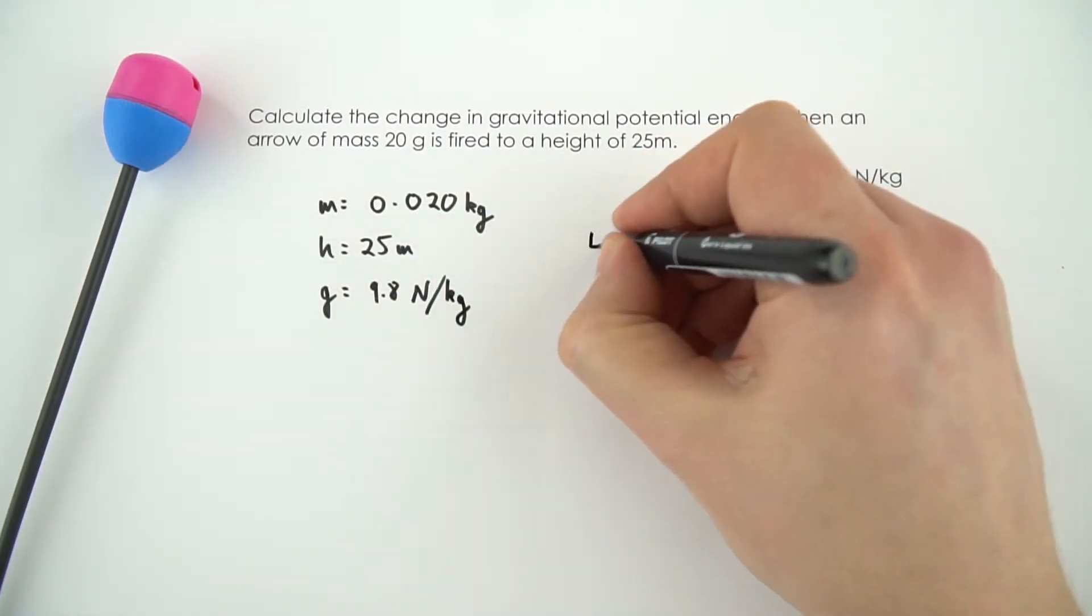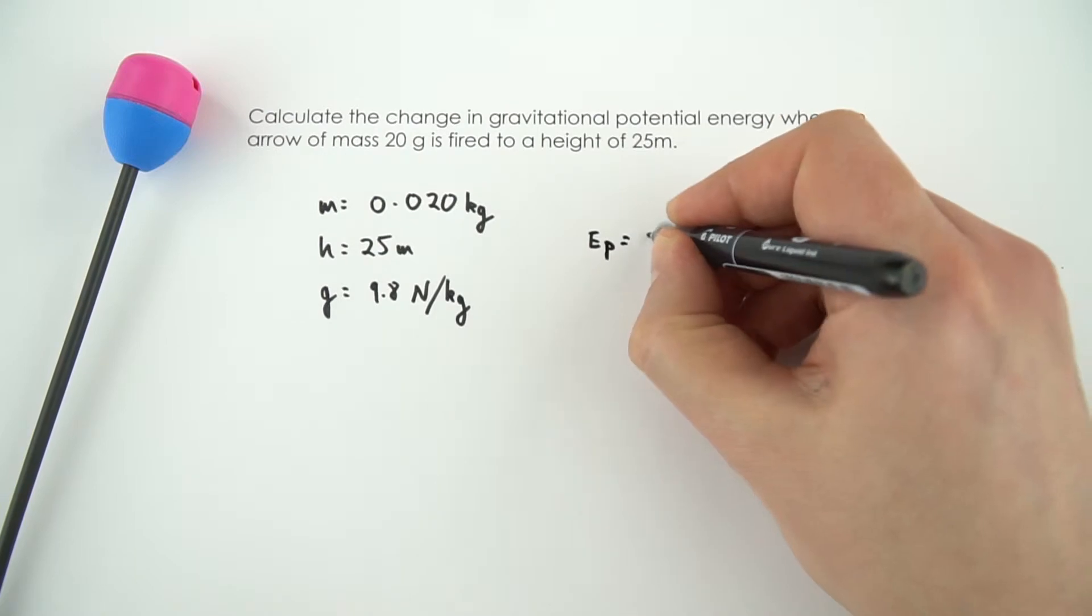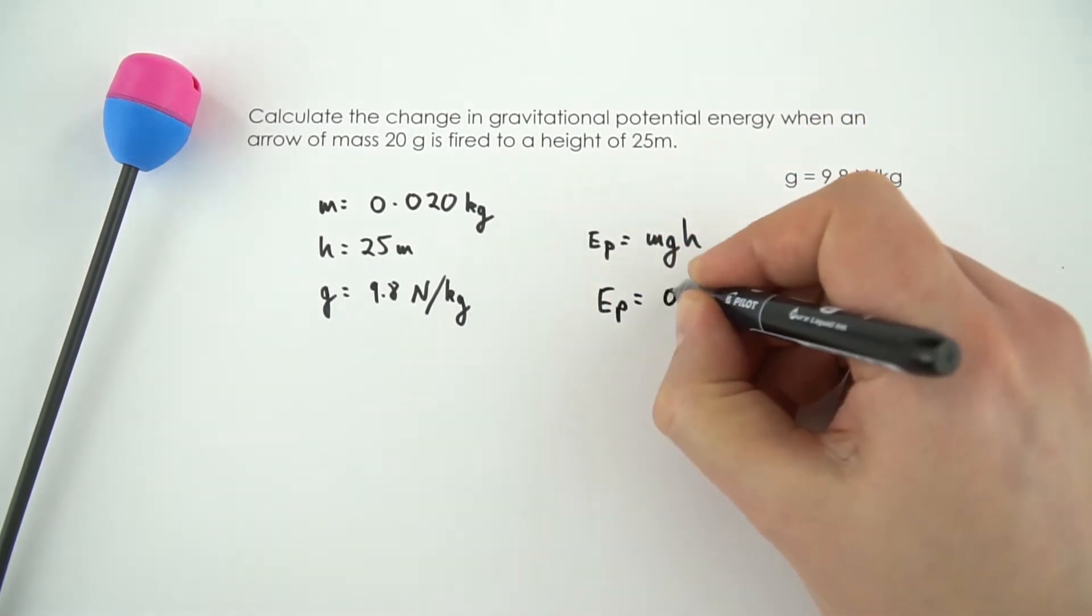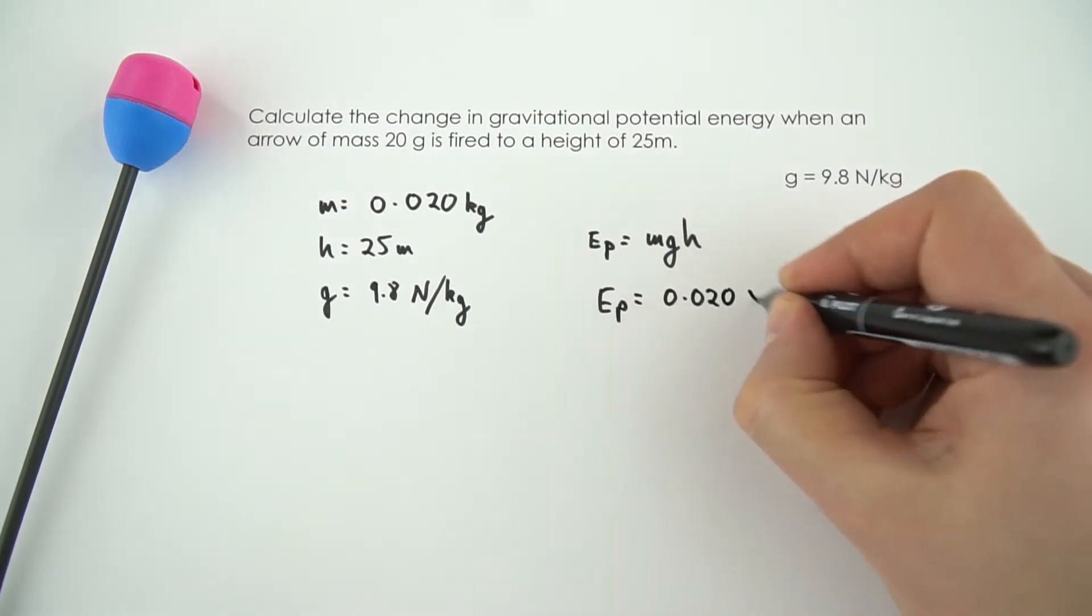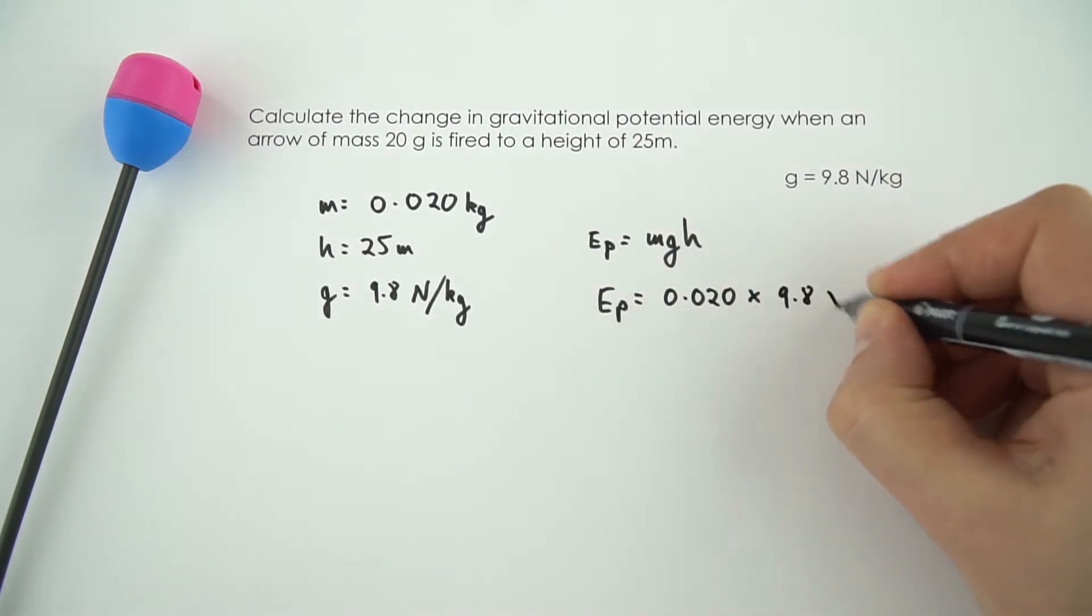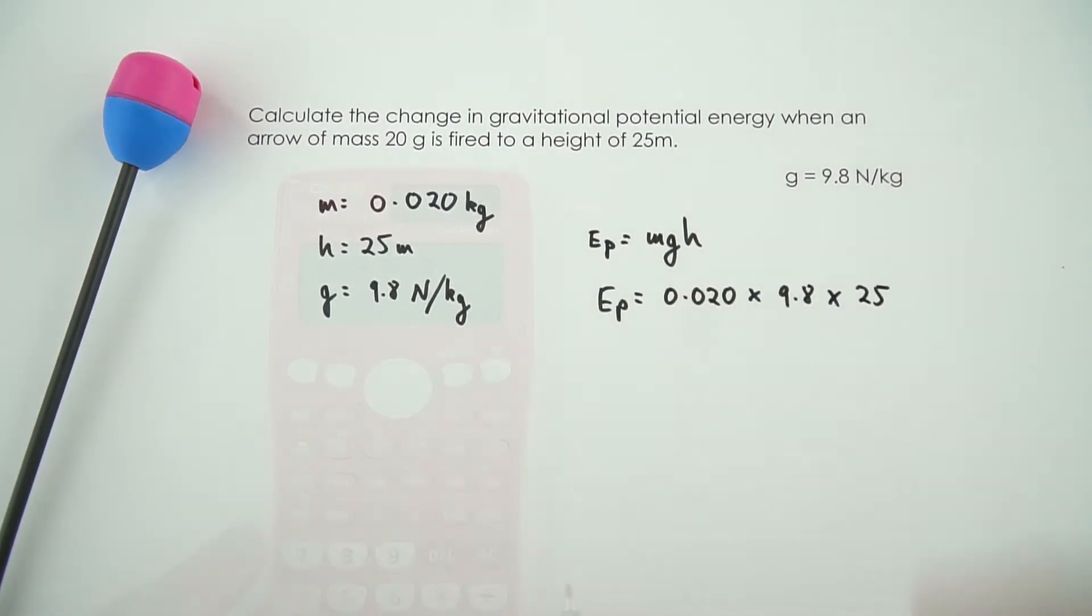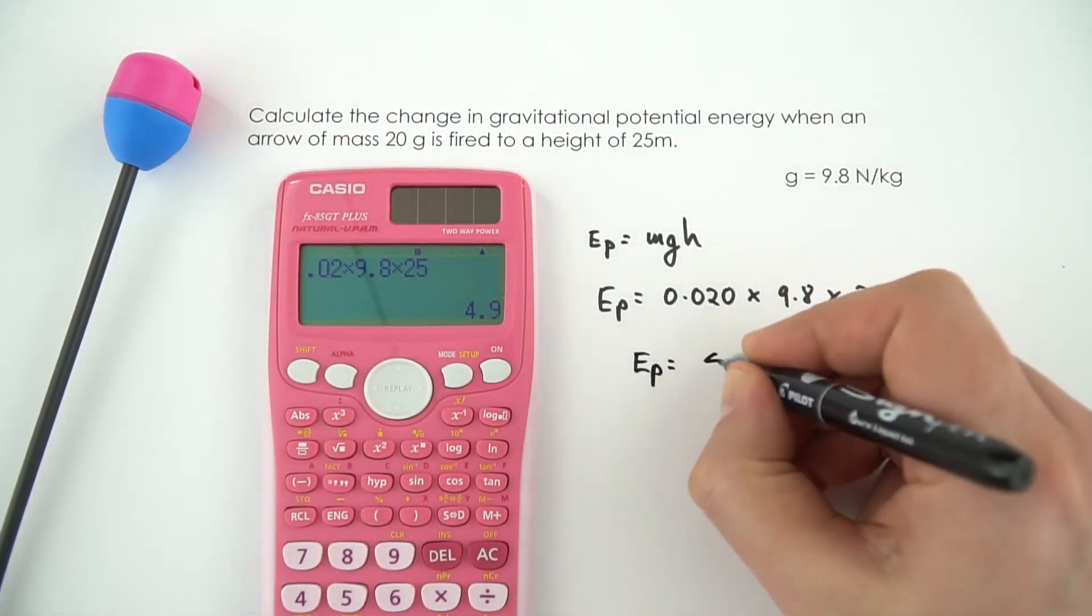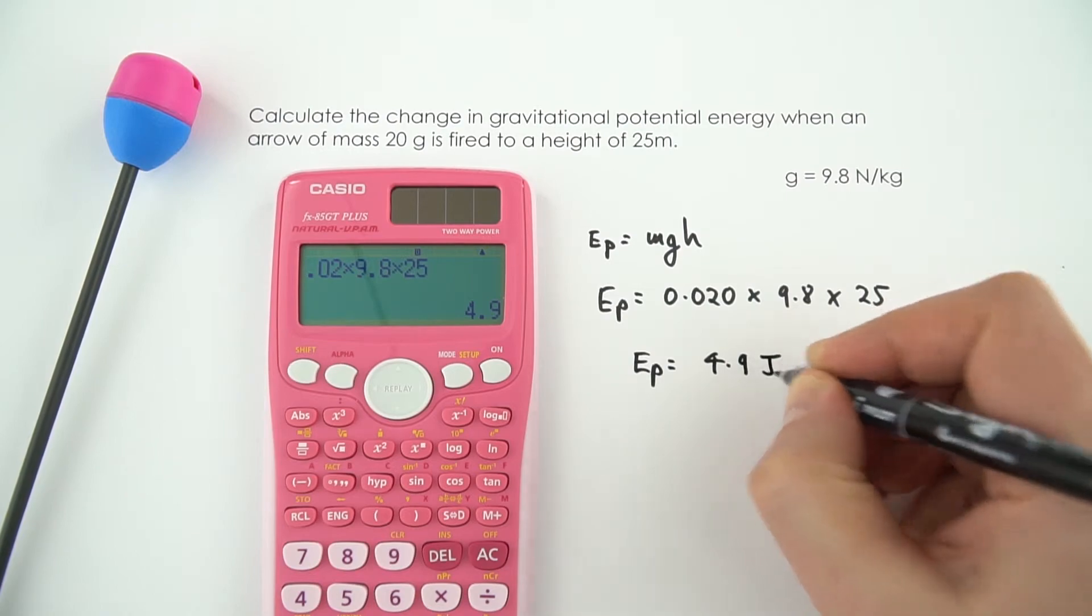So the equation we need is Ep is equal to mgh. That means it's going to be equal to 0.020 times 9.8 times 25. And that then gives an answer equal to 4.9 joules. And that's it.